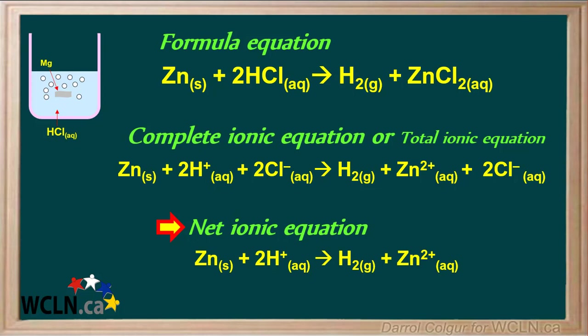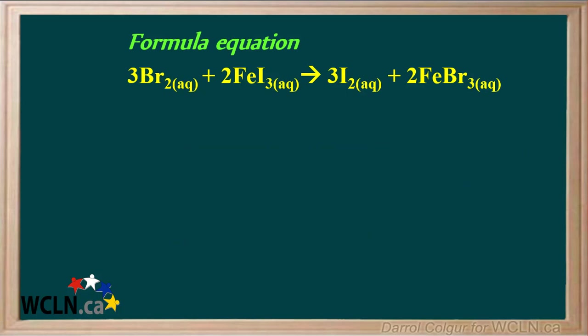Let's do another example. When aqueous bromine is added to an aqueous solution of iron(III) iodide, aqueous iodine and aqueous iron(III) bromide are formed. Here's the formula equation showing this reaction.